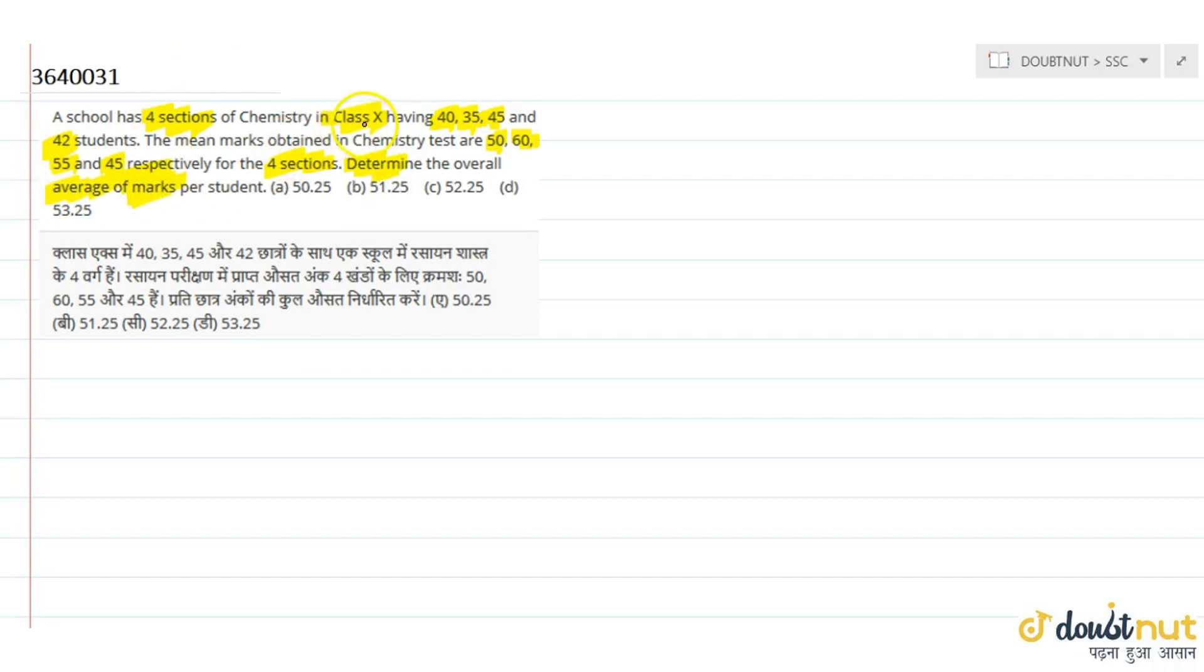Chemistry class 10 has 4 sections. The chemistry marks are given, and the sections have 40, 35, 45, and 42 students. Chemistry marks are given.